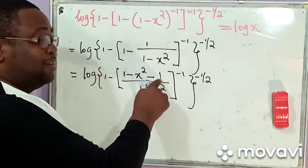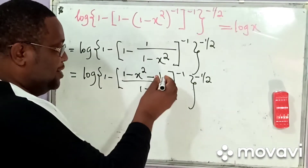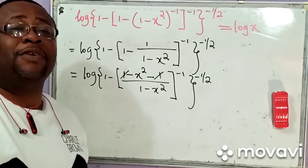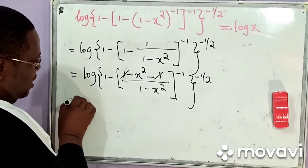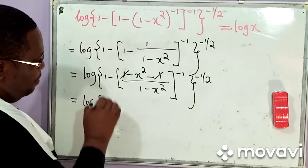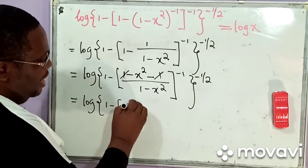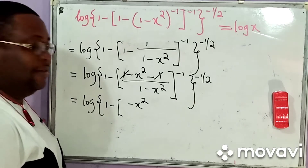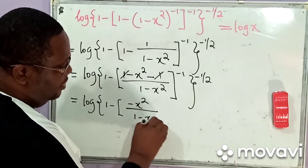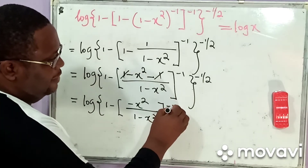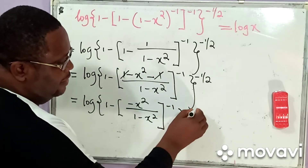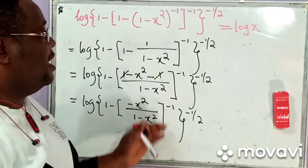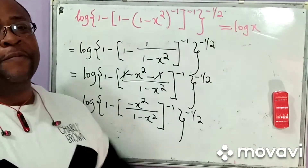See something here? 1 will subtract 1 and fall out — 1 minus 1, this 1 cancels this 1. So what do I have up here now? It simply becomes negative x squared. So this becomes equal to the logarithm — opening a bracket — 1 minus negative x squared, all raised to the power negative 1 and then negative 1 over 2. Remember, our destination is to get log x. That's what the question says: simplify the whole of this so that your answer simply becomes log x.